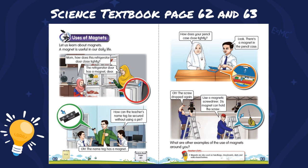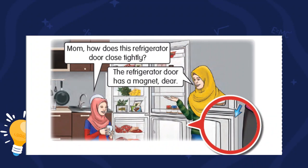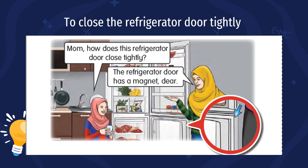Please refer to your Science textbook page 62 and 63. This is a conversation between a mother and her daughter. Her daughter asks, 'Mom, how does this refrigerator door close tightly?' Her mom replied, 'The refrigerator door has a magnet, dear.' So the first use of a magnet is to close the refrigerator door tightly.